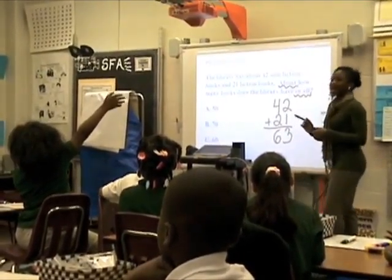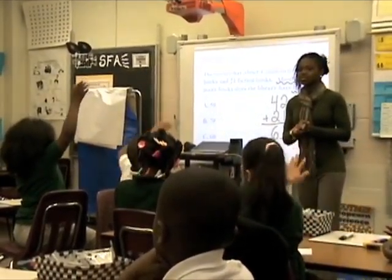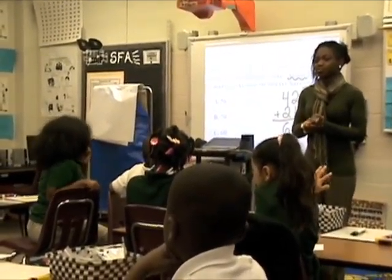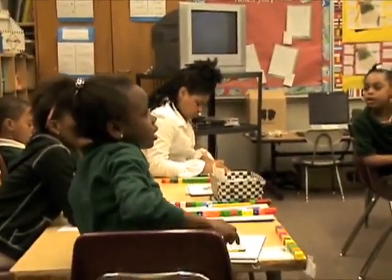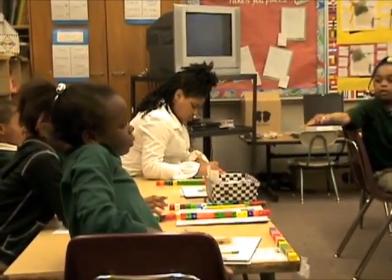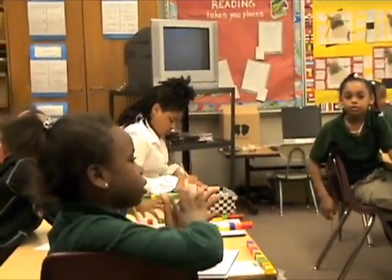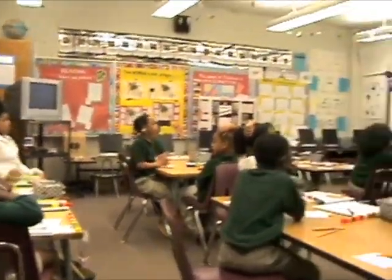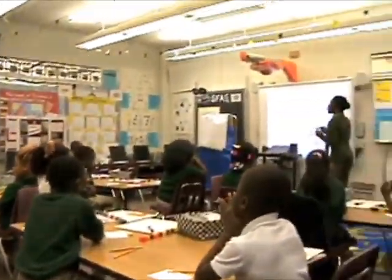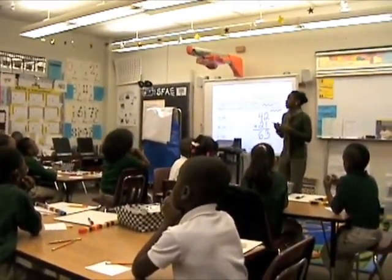And when it says 'about,' what does that mean, Kali? It means to round it to the nearest ten — or do an estimate. Let's remind ourselves of our rounding song. Ready? Go.